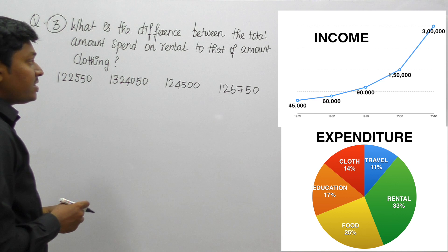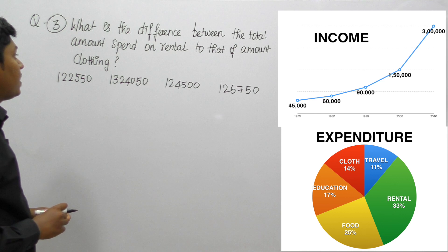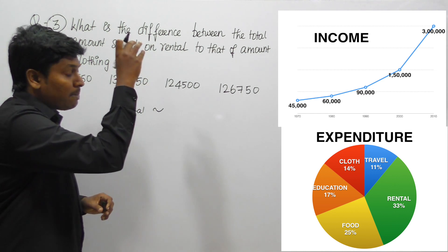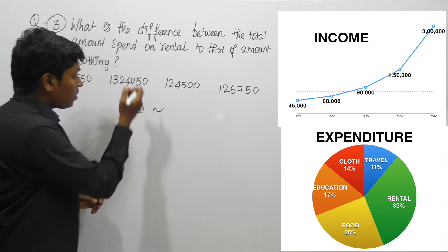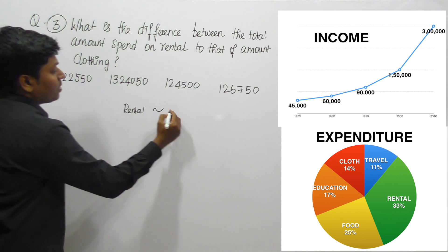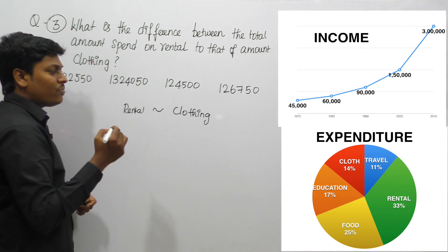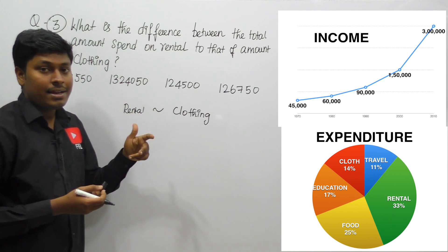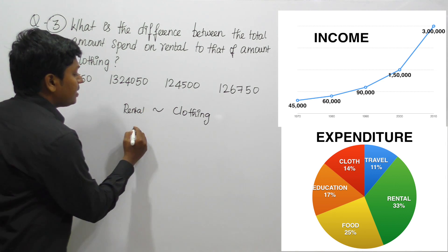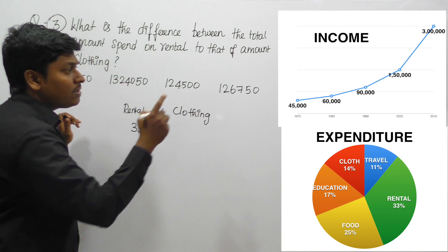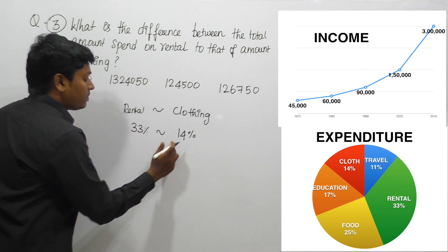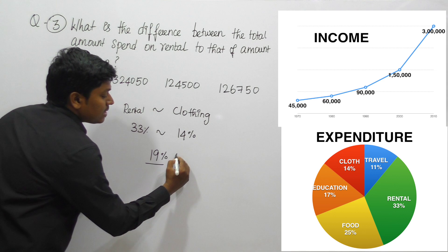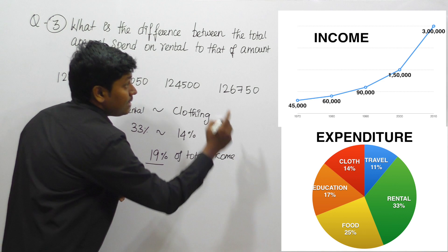Question 3: What is the difference between the total amount spent on rental and the total amount spent on clothing for all years from 1970 to 2010? Don't follow the traditional method — it's a lengthy procedure to calculate each year separately. Rental is 33% and clothing is 14%, so the difference is 19 percentage points. Our target is to find 19% of the total income from 1970 to 2010.